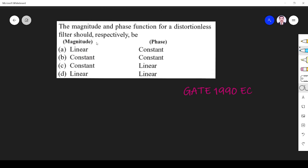They are asking about the magnitude and phase of a distortionless filter. We know the channel is acting as a filter, so when you transmit X(t), it is received by the receiver. We should get the same thing after some delay.